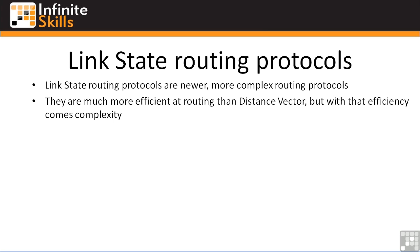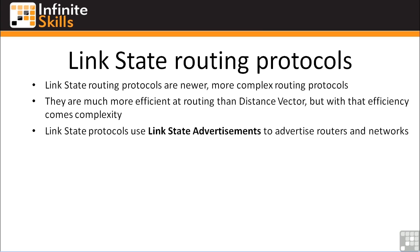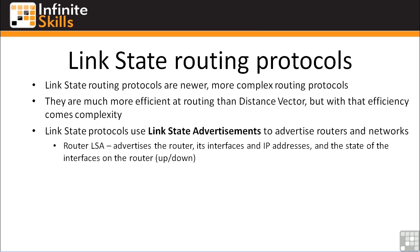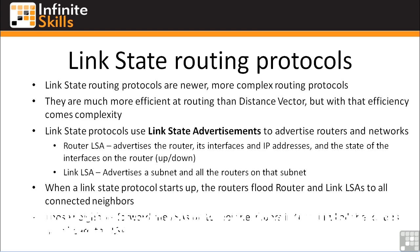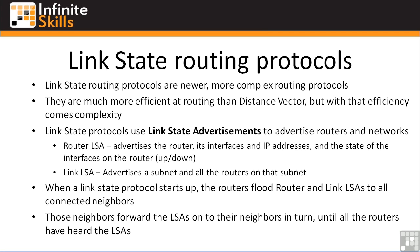So how do link state routing protocols work? At the very basic level, link state protocols use link state advertisements to advertise routers and networks to one another. The router LSA advertises the router itself — all the interfaces, IP addresses, and link state of all interfaces on the router, whether they're up or down. The link LSA is an advertisement for a subnet and all the routers on that subnet. When a router starts up, it floods router and link LSAs to all of the neighbors connected to it, which is generally all directly connected routers and switches that meet the neighbor criteria. Those neighbors then forward those LSAs on to their neighbors in turn, until all the routers in the routing domain have heard the link state advertisements from the newly brought-up router.